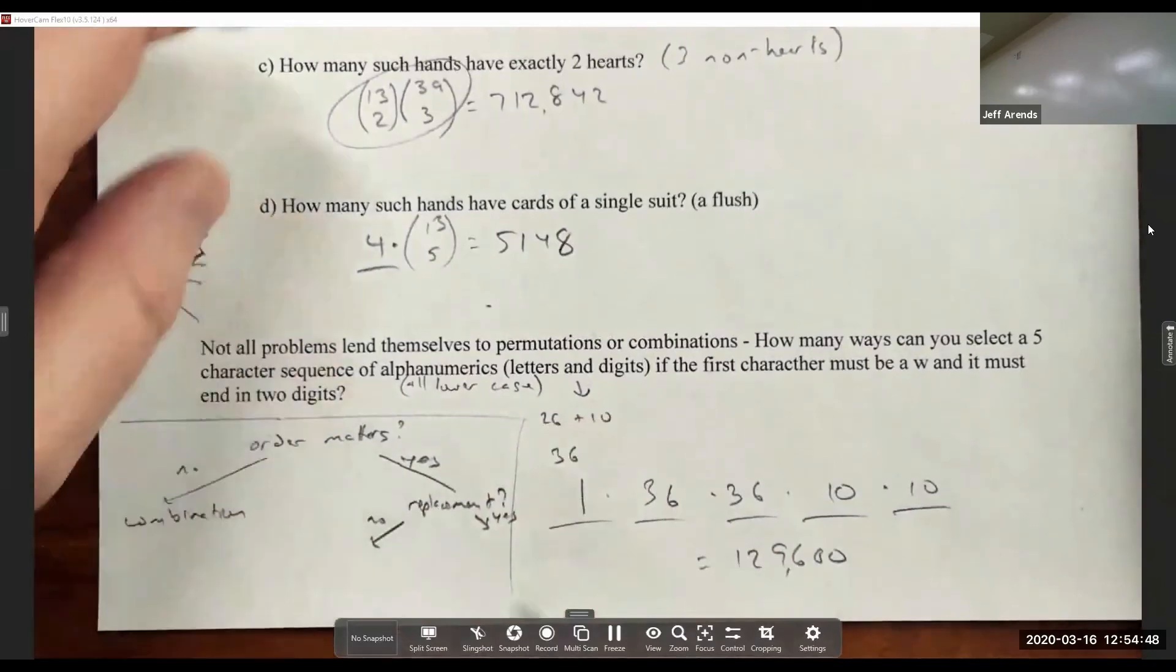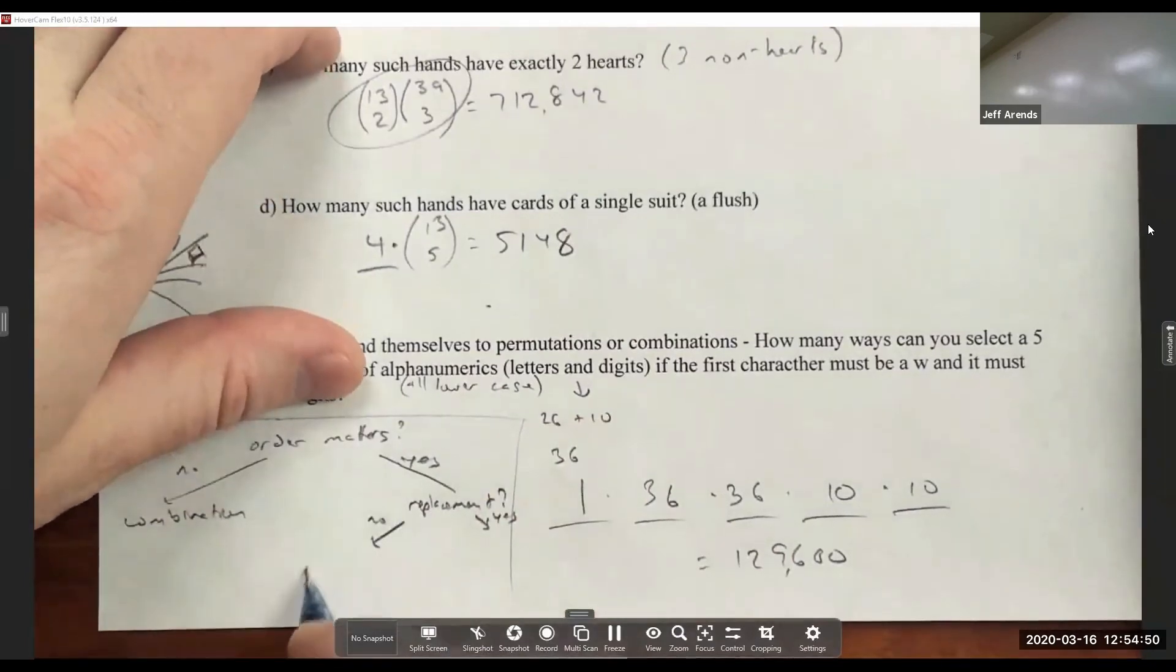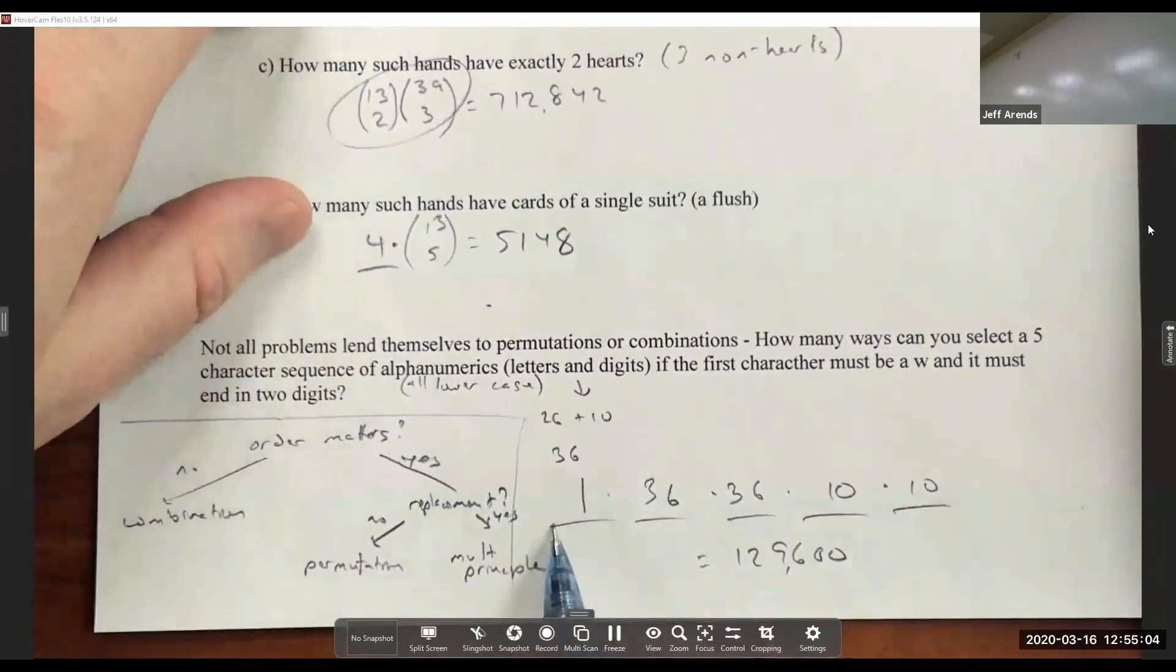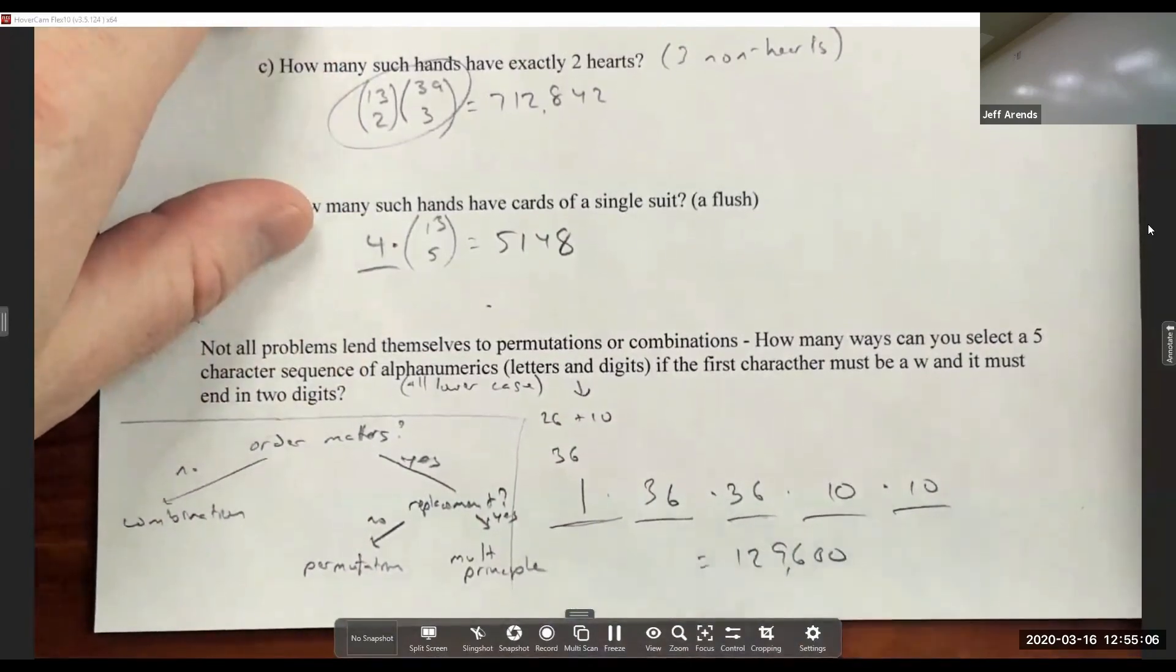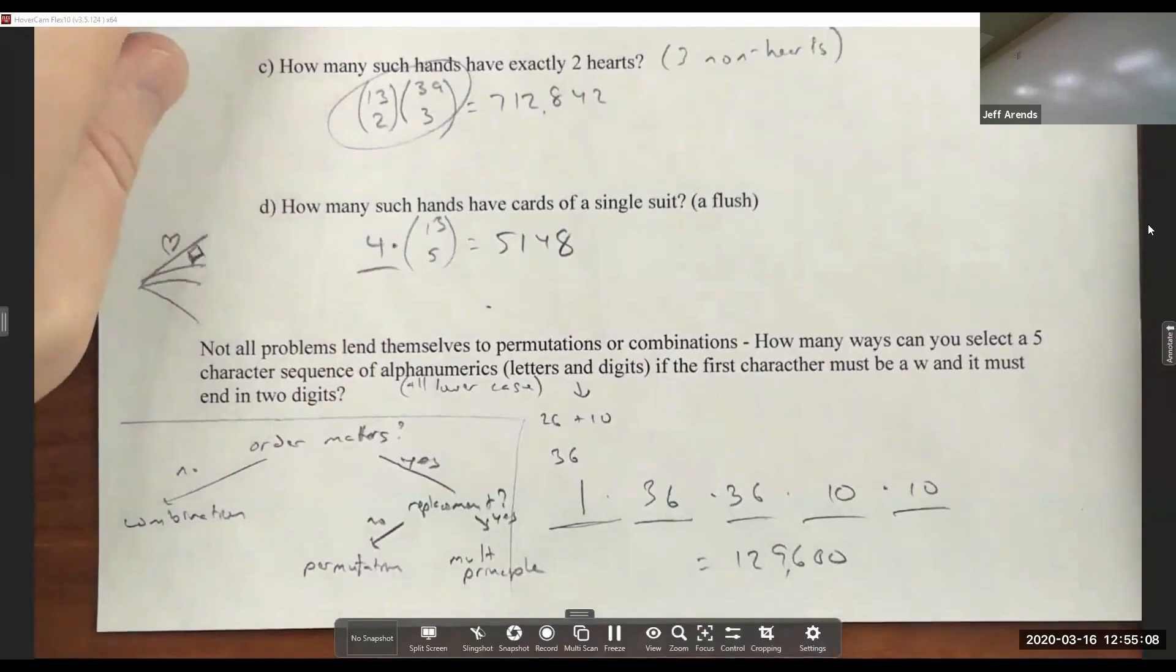So if it's without replacement and order matters, we're dealing with permutation. If order matters and it's with replacement, then we're going to be dealing with just a multiplication principle. And it's probably better to just kind of do out your places here and figure out the number of different ways you can go with each decision.